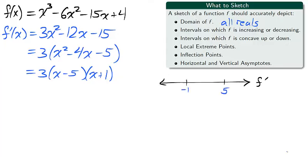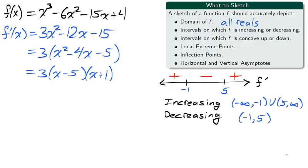We divide the number line into intervals using the critical numbers, and we use the test points 6, 0, and negative 2 to determine if the derivative is positive or negative on these intervals. Using the increasing-decreasing test, we find that f is increasing from negative infinity to negative 1 and 5 to infinity, while f is decreasing from negative 1 to 5.